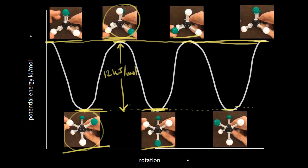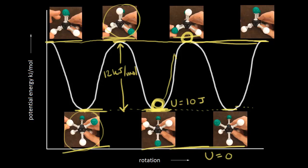Lower in energy means more stable. The easy way of thinking about that is to imagine these things as hills. If I have a boulder down here at the bottom of the hill and compare that to a boulder at the top of the hill — in physics, you can set your potential energy equal to zero at the ground. So let's say the potential energy U is equal to zero joules at this point, and the boulder in this valley is 10 joules. It would take energy to push this boulder up the hill to a point with, say, 22 joules. That final position is less stable and has higher potential energy.